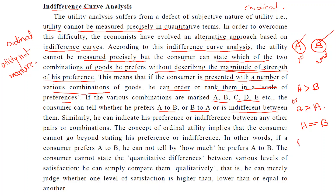Suppose among five combinations A, B, C, D, E, his first preference is B, second is E, then he chooses C, then D, and his last preference is A. So here he has given his preference among the available combinations.